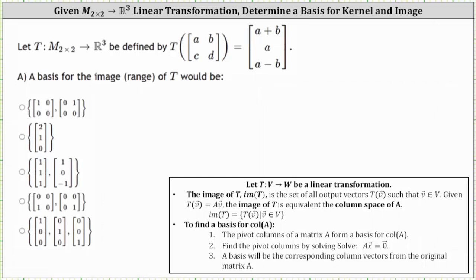Let the transformation T from M22 to R3 be defined by T of the two by two matrix ABCD equals the vector (A plus B, A, A minus B). For part A, we're asked to find a basis for the image or range of the transformation. The image or range would be the set of all output vectors such that the input two by two matrix is in M22. If we look at the form of the output vectors, they are of the form (A plus B, A, A minus B).